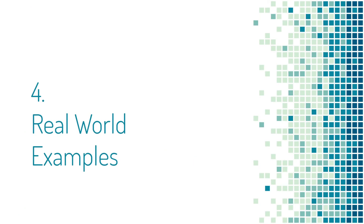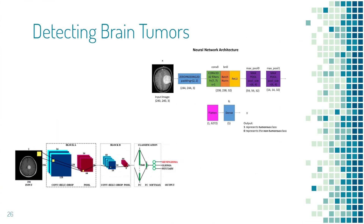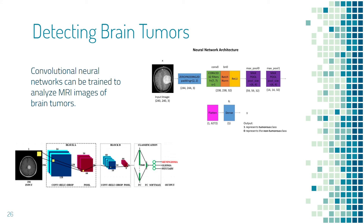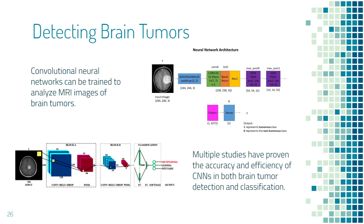Now we're going to talk about some real-world examples of neural networks being used in tumor detection. Currently, the most popular and researched use for CNNs in tumor detection is specifically in brain tumor detection. Brain tumors have the potential to be extremely dangerous, and therefore having early and accurate detection methods is important. As described earlier, neural networks, when trained with data, can analyze MRI images and diagnose tumors quickly and efficiently. This reduces the amount of time it takes for a diagnosis and limits the possibility of human error. Many studies and tests have been done with convolutional neural networks, typically resulting in high diagnostic accuracy. In some cases they determine if brain tumors are benign or malignant, and in others they can actually classify the brain tumors into different categories.